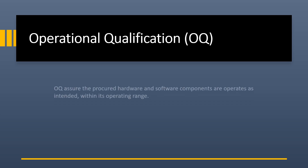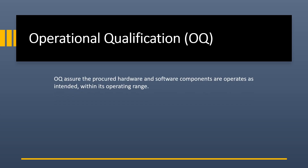Operational qualification assures that the procured hardware and software components operate as intended within their operating range. For example, in an HPLC instrument there is a column oven with an operating range of, say, 10 to 50 degrees Celsius.